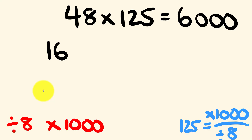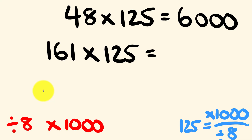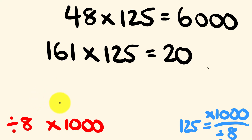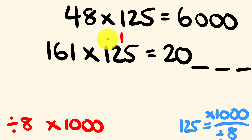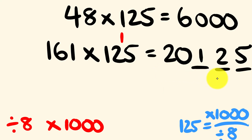What about 161 multiplied by 125? This is a variant — see how you go. First, divide by 8: 161 divided by 8 is equal to 20, but we had 1 remainder. Then multiply by 1000, giving three spaces. 1 times 125 is 125, and we put that on. So 161 times 125 is equal to 20,125.